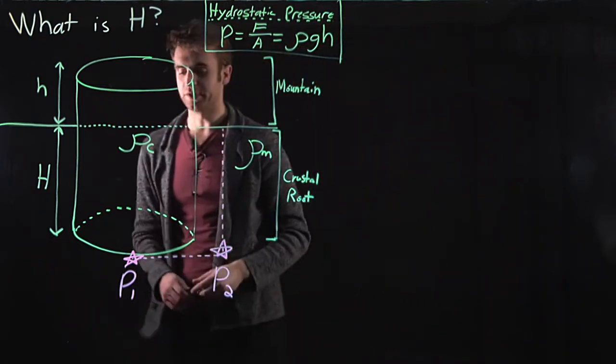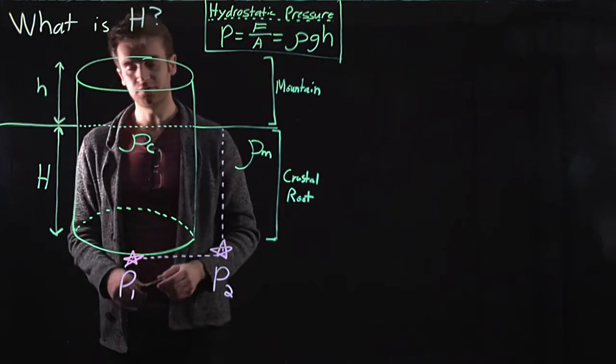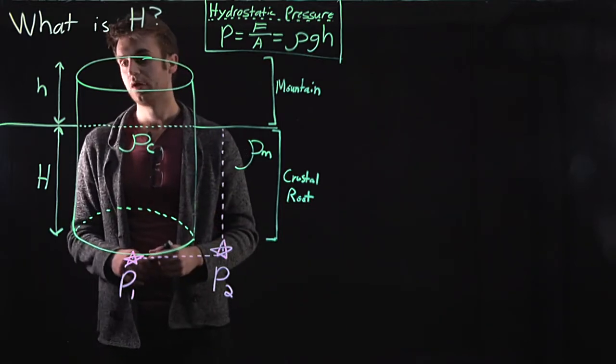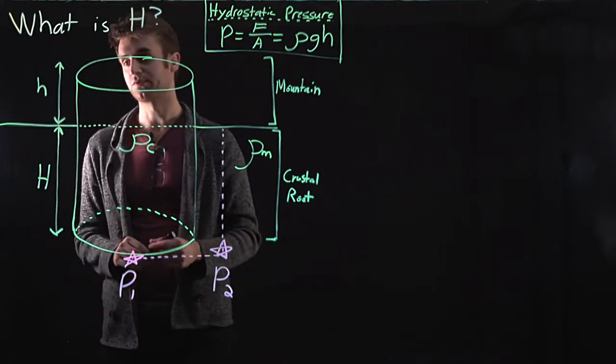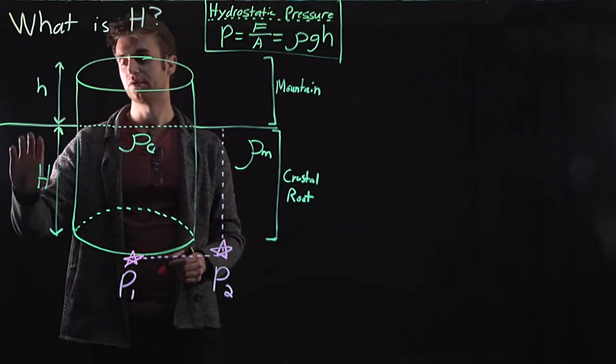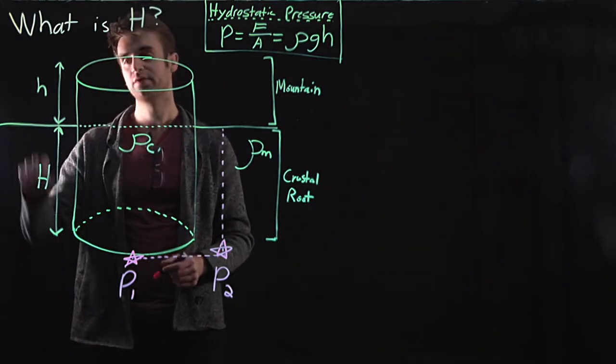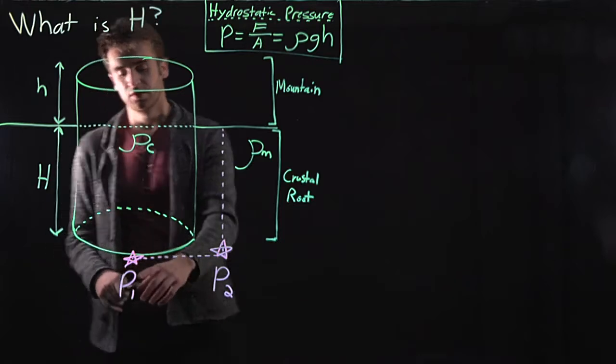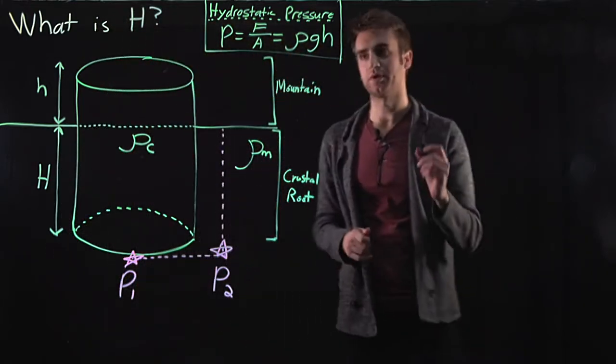So let's look at p1 here. All of the material above p1 is a crustal rock. And the height of that crustal rock is the sum of big H, the material underneath the surface, and little h, the material above the surface. So let's write p1 here with our hydrostatic pressure formula.